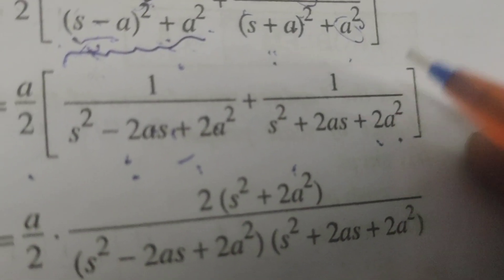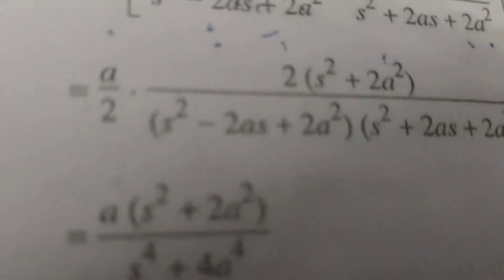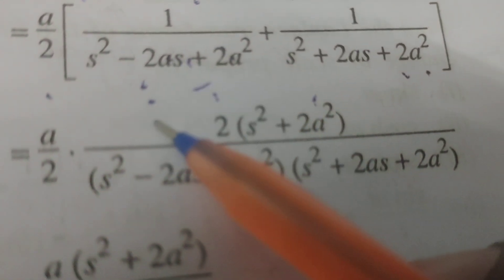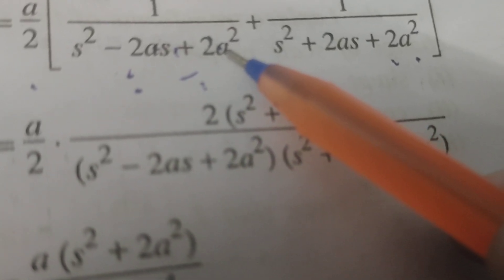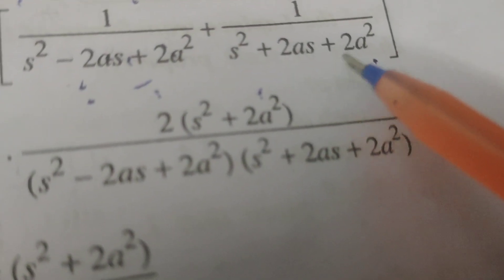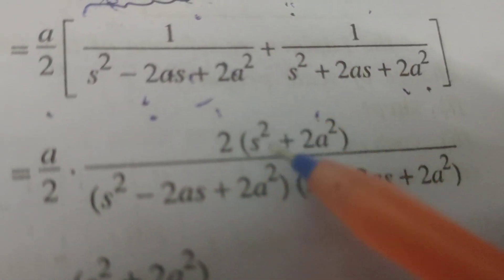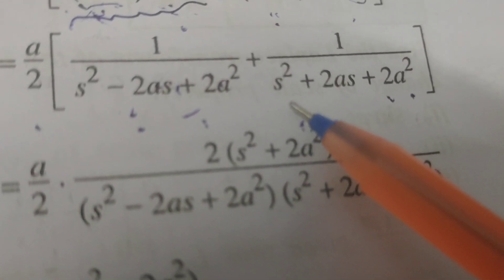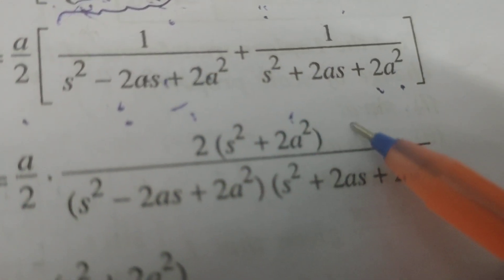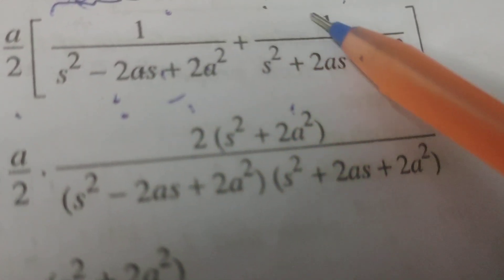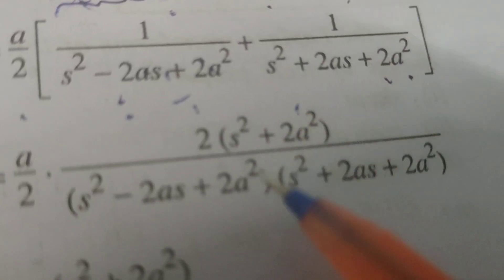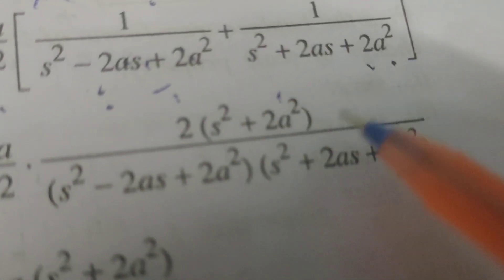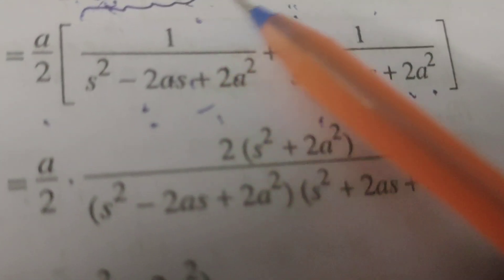Now, applying LCM: denominator is (s² - 2as + 2a²)(s² + 2as + 2a²). The numerator becomes 2 into s² + 2as + 2a² plus s² - 2as + 2a², which simplifies as the 2as terms cancel: giving 2(s² + 2a²).